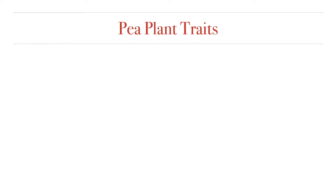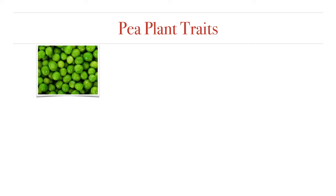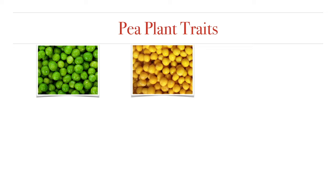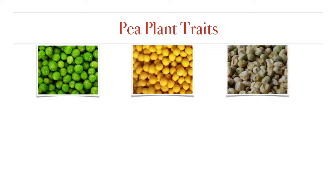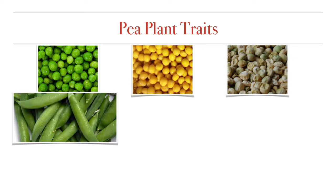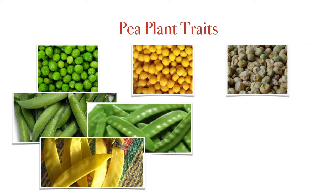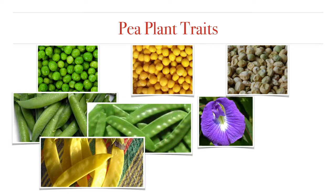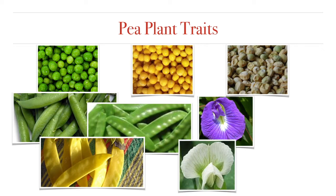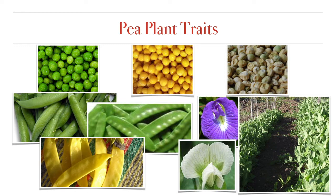Mendel worked with pea plants because they have a variety of very clear traits, which made them a perfect subject for his experiments. For example, seed color — the peas that you eat are the seeds of the pea plant, and most of the time we eat green peas, but there are also yellow peas. Not only are pea seeds round, sometimes they can also be wrinkled. There are differences in the pods — they can be inflated or deflated, and green or yellow. There are also differences in flower color: some pea plants have purple flowers and some have white. And pea plants really just have two heights: tall or short, which Mendel called dwarf plants. For each trait, there are two very easily distinguishable forms.